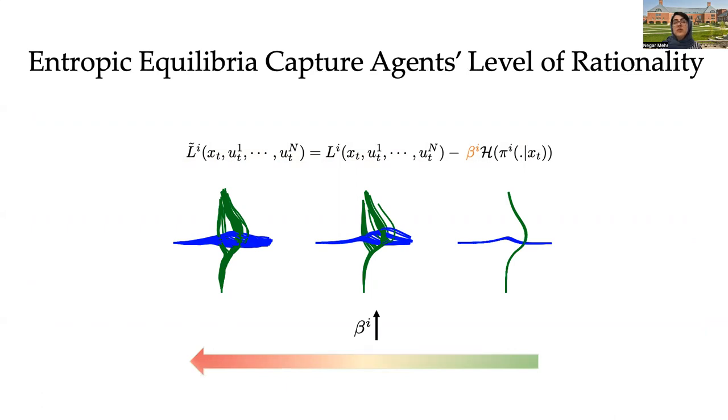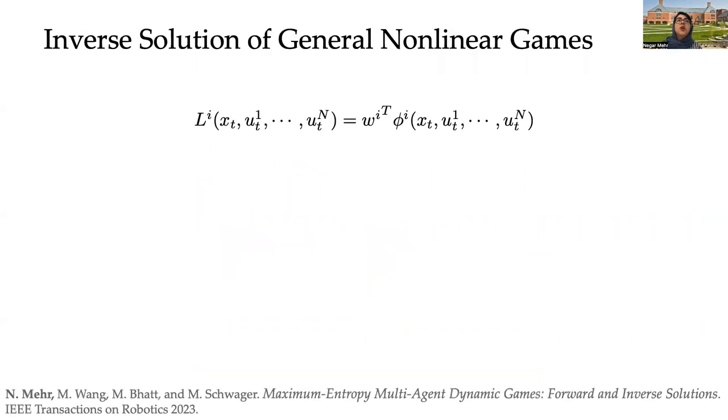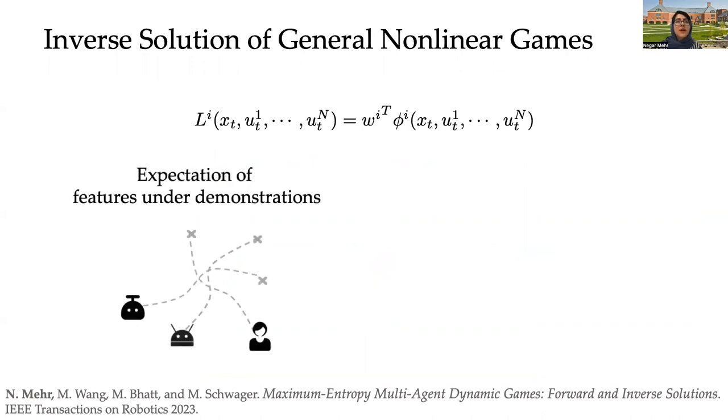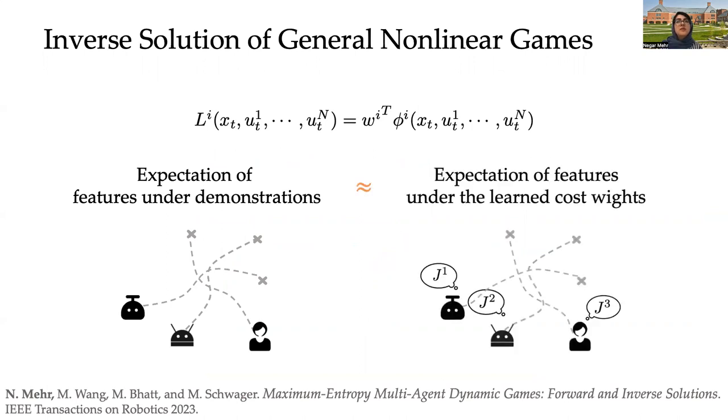So now that we have a notion of noisy Nash equilibria, we can define and solve our inverse dynamic game through the following. We assume that the running cost of every agent is a weighted sum of a number of features, and we try to learn these weight parameters such that the expectation of these features, φ_i's, under the demonstrations of trajectories, are roughly the same as expectations of these features under entropy cost equilibria of the learned cost weights.